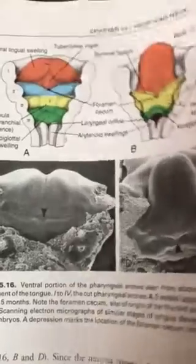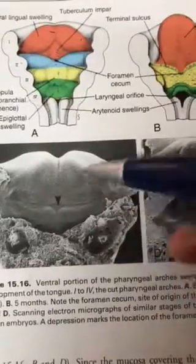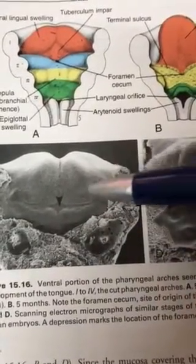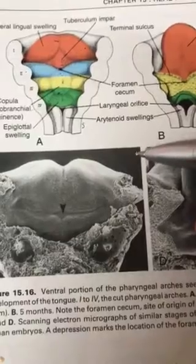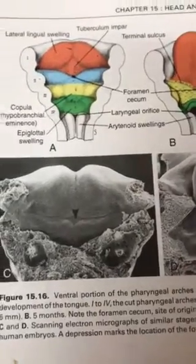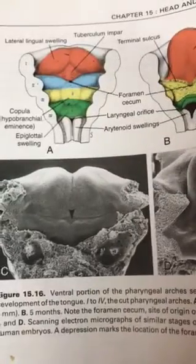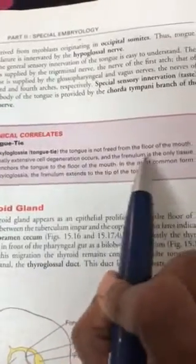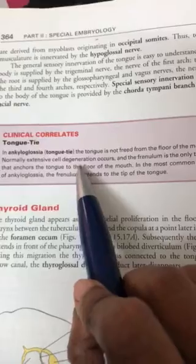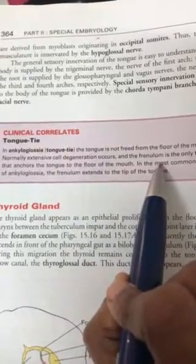Initially during development, the entire tongue is attached to the floor of the mouth. Towards the end of development, the floor undergoes degeneration — only one part, the tip, remains attached by the frenulum linguae. If the frenulum linguae fails to degenerate — meaning the entire floor portion doesn't degenerate — the tongue remains tightly adherent to the floor, leading to tongue tie, called ankyloglossia.